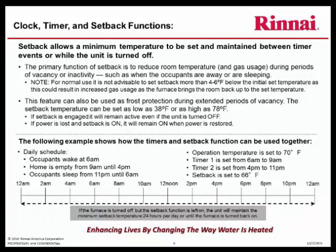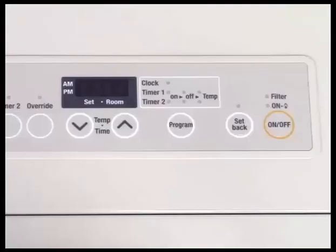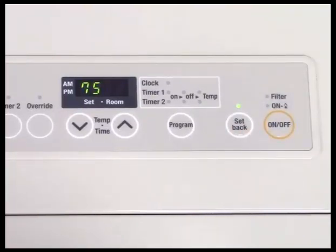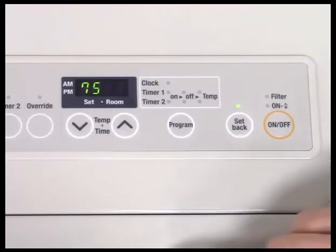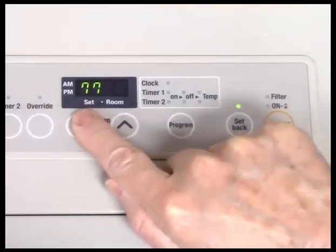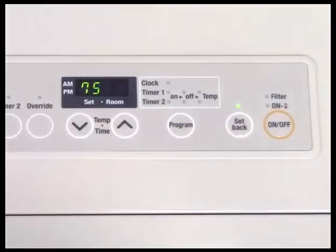If the furnace is turned off but the setback function is left on, the unit will maintain the minimum setback temperature 24 hours a day or until the furnace is turned back on. To engage setback, with the unit turned off but plugged in, press the Setback button. The current setback temperature will be displayed. Use the up or down arrows to change the setback to the desired temperature. Note that when setback is engaged, the unit will turn on and perform a self-test, then turn off if the room is above the setback temperature.